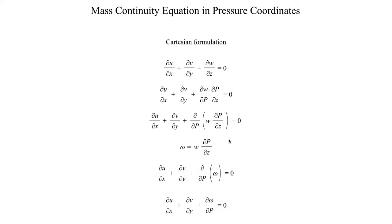One thing to point out: the reason we can perform this trick is that dp/dz can be treated as a constant in this case. I did skip a few mathematical steps to obtain that, but this is in fact true. This is the form of the mass continuity equation you obtain in pressure coordinates, going from the Cartesian formulation shown above to the pressure coordinates formulation at the bottom of the screen.